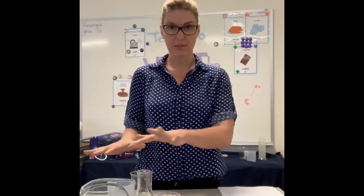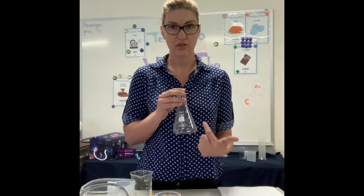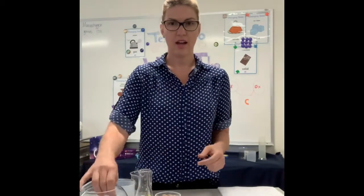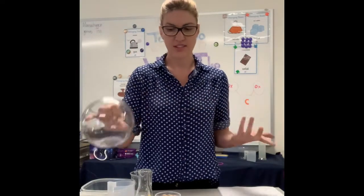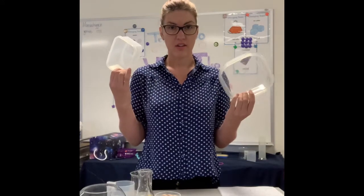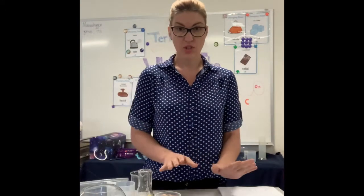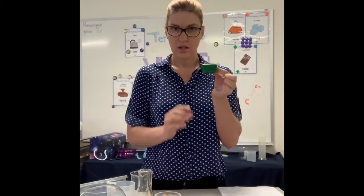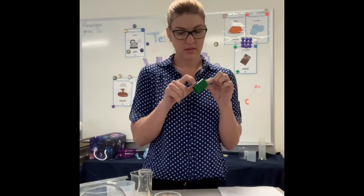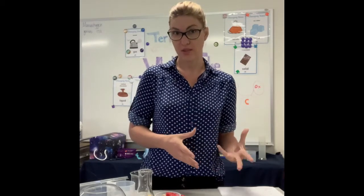So we have here some containers: I have a flask, which is a nice triangle shape; a fish bowl, which is a nice spherical shape; and some simple kitchen containers from my home this morning in different shapes. I have some solids here in front of me — some tornado makers, some pegs, and some marbles. You at home might have some toys, Lego, or some other sort of blocks that you might like to experiment with.